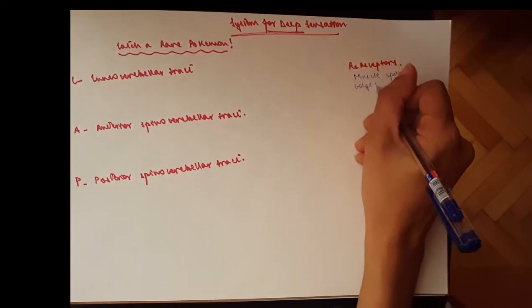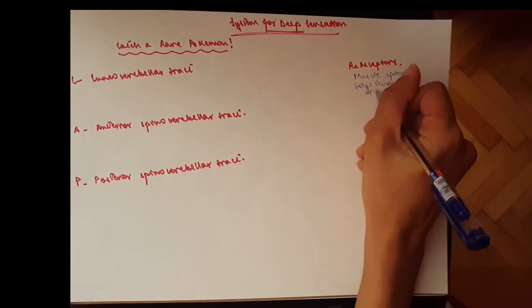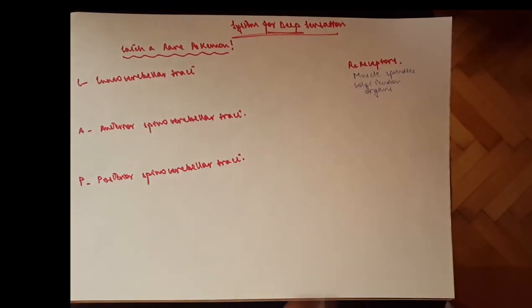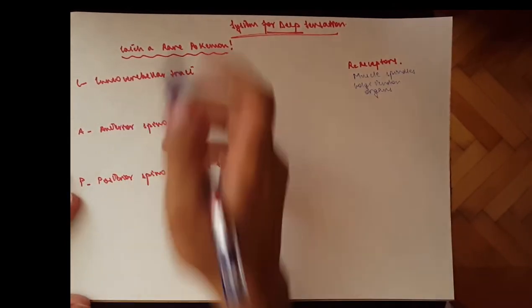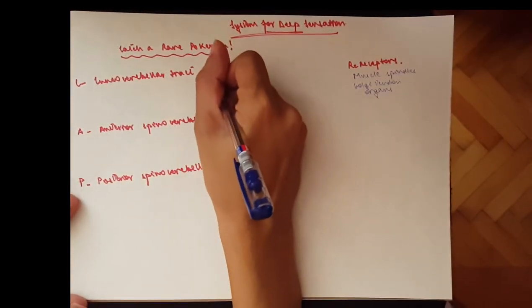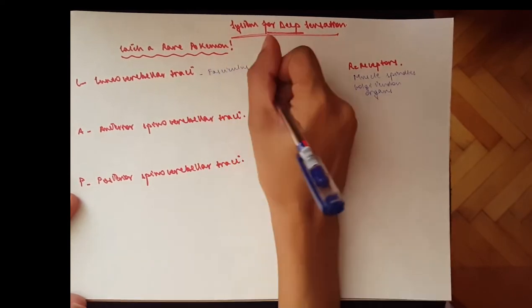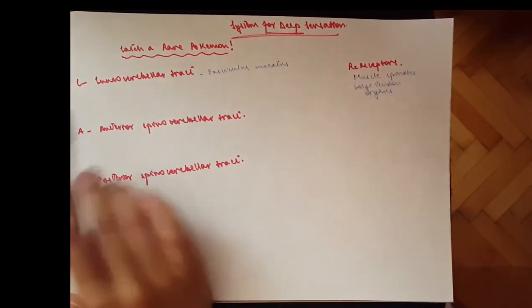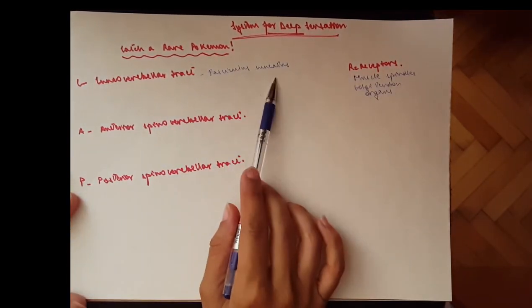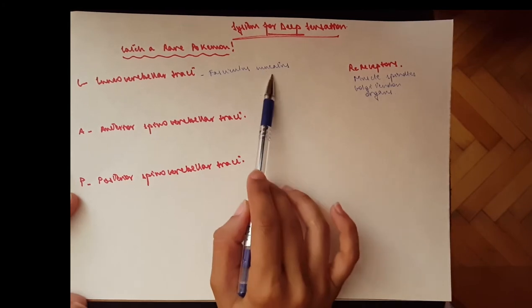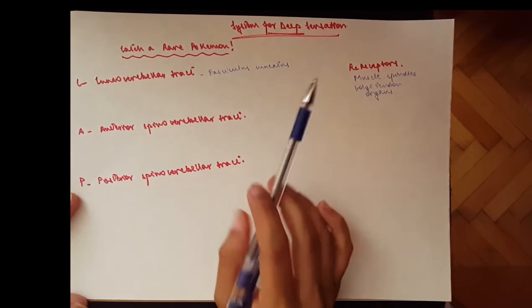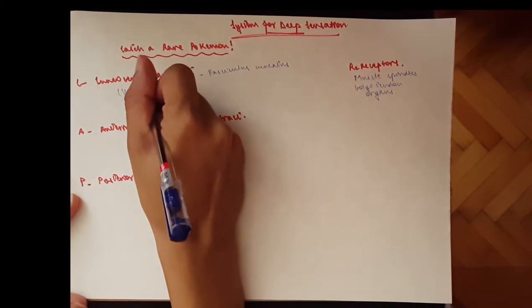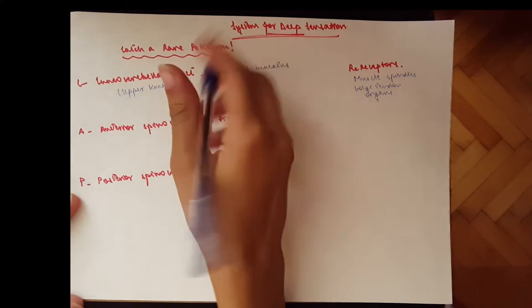Now for the cuneocerebellar tract, it's to do with the fasciculus cuneatus, which is the dorsal column medial lemniscus pathway, a part of it. So the fasciculus cuneatus, there's a cuneate nucleus in the spinal cord, and so it's only for the upper body and the upper limbs.